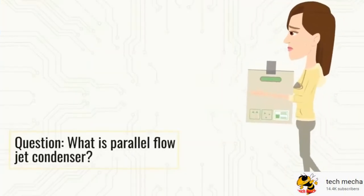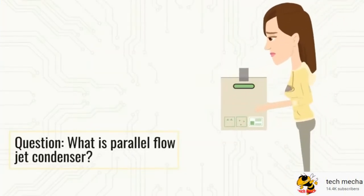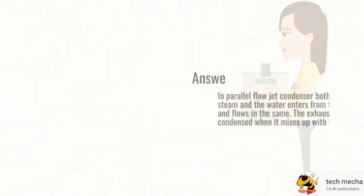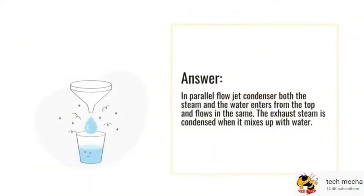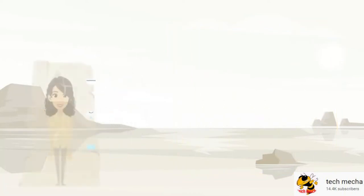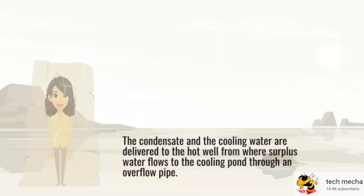What is a parallel flow jet condenser? In a parallel flow jet condenser, both the steam and the water enter from the top and flow in the same direction. The exhaust steam is condensed when it mixes up with water. The condensate and the cooling water are delivered to the hot well, from where surplus water flows to the cooling pond through an overflow pipe.